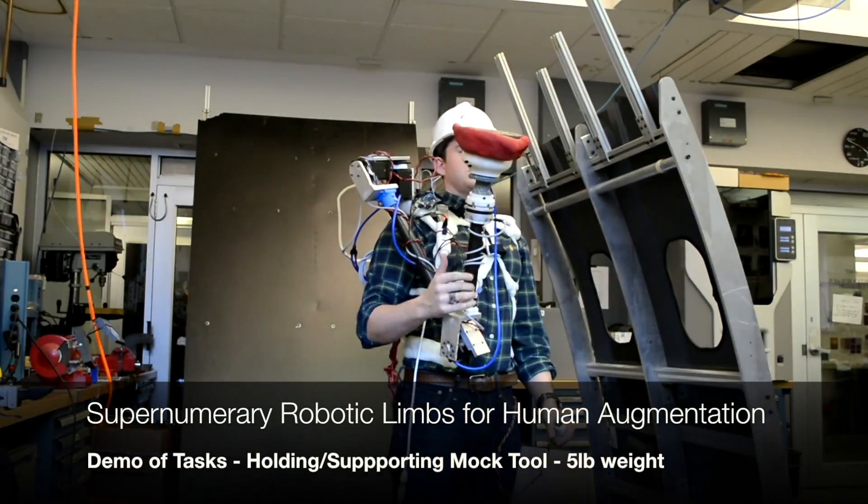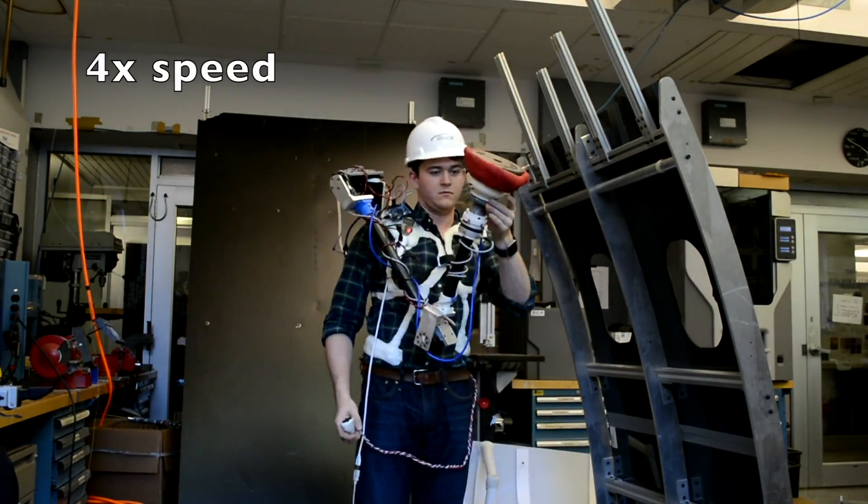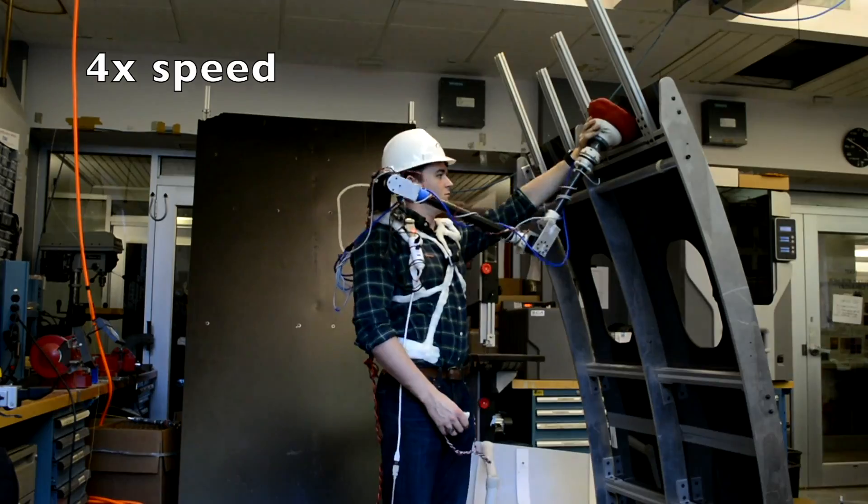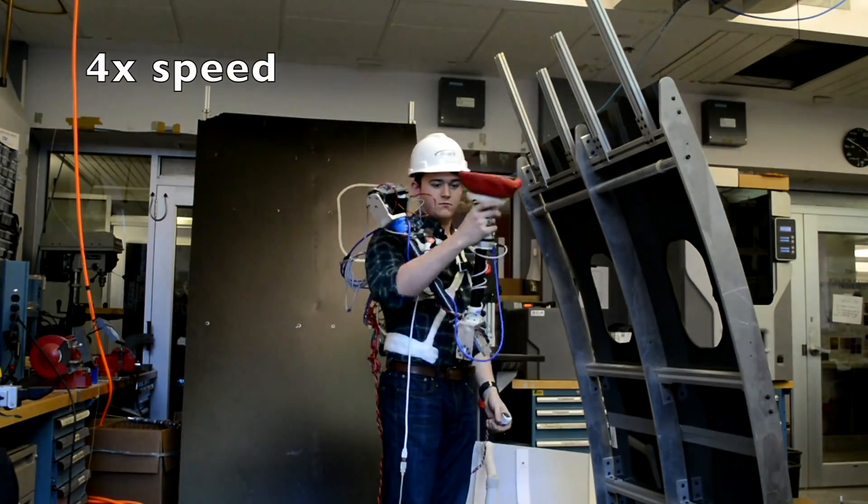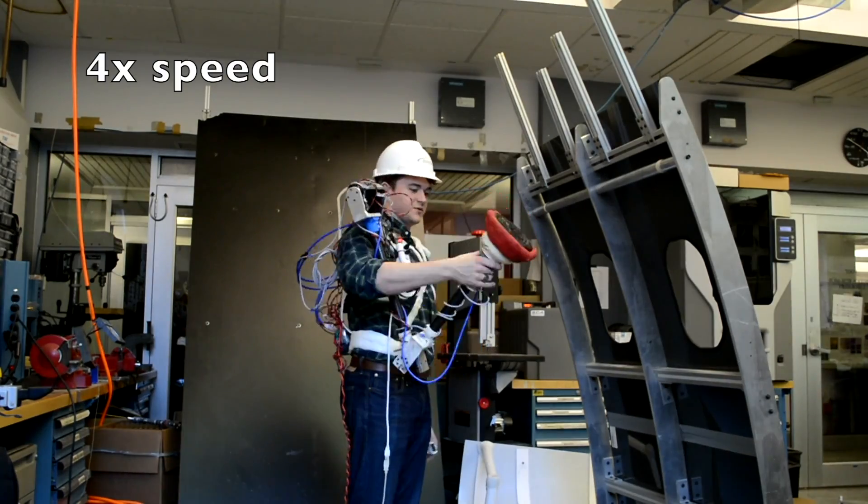In this demo, the worker uses the SRL to hold up a tool, in this case a five pound weight. The gripper holds the mass and the control loop is compensating for the weight of the mass. Thereby, any input force from the wearer commands the robot movement, making the tool effortless to move.